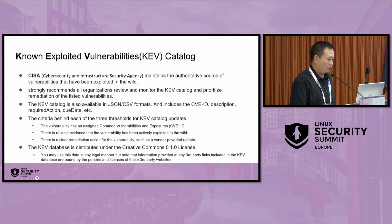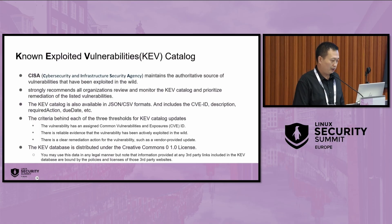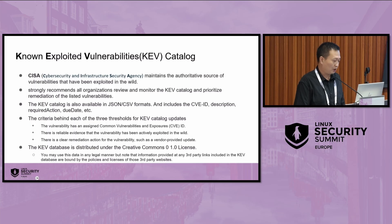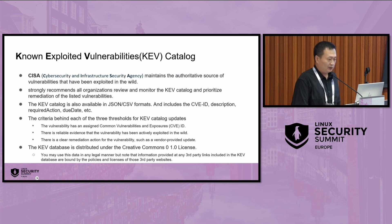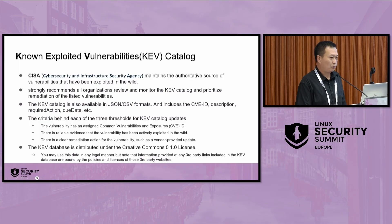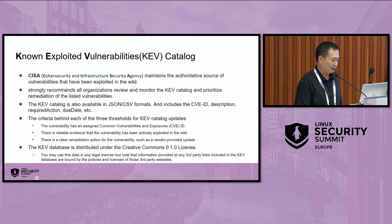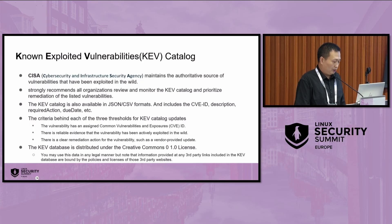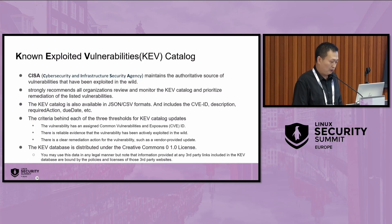We also focus on the KEV — the Known Exploited Vulnerabilities catalog. CISA maintains this authoritative source of vulnerabilities that have already been exploited in the wild. You must prioritize fixing those. It is also mandatory in our product. It's available in JSON and CSV format, and includes CVE ID, description, and more. This data is under Creative Commons 1.0 license, so you can use it in your daily work. We have already integrated this catalog into our internal tools to track CVE status.